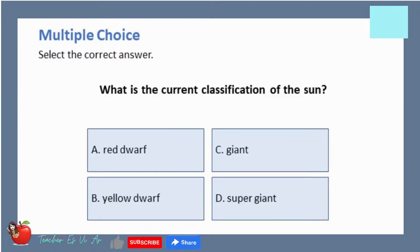Multiple choice. Select the correct answer. What is the current classification of the sun? A. Red dwarf. B. Yellow dwarf. C. Giant. D. Supergiant.